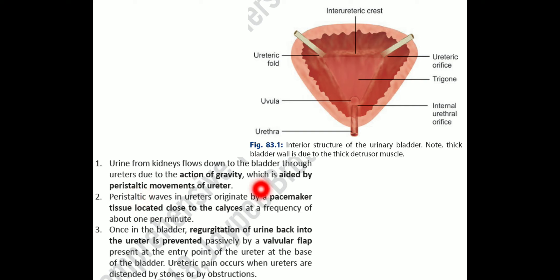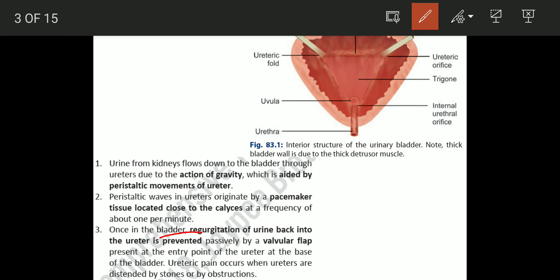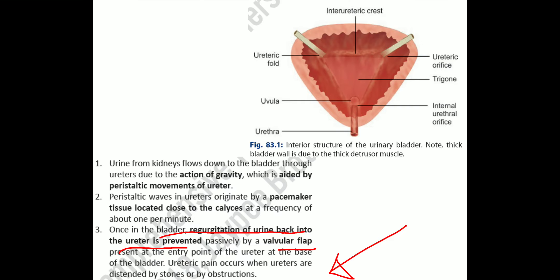Flow is aided by peristaltic movements of the ureter. These peristaltic waves originate from pacemaker tissue close to the calyces at a frequency of one per minute. Once in the bladder, regurgitation of urine back into the ureter is prevented passively by the valvular flap at the entry point of the ureter at the base of the bladder. Ureteric pain occurs when ureters are distended by stones or any obstruction.